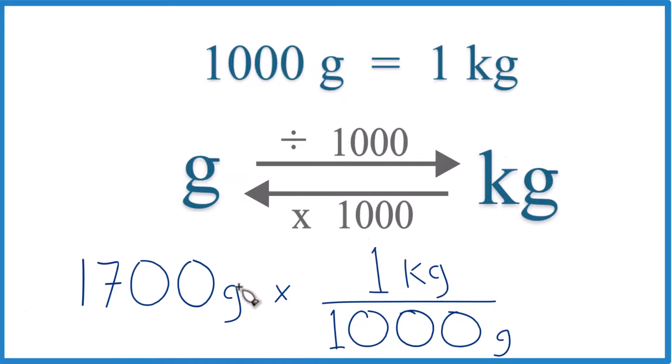So now grams on the top and the bottom, they cancel out. 1,700 times 1 kilogram. That's 1,700 kilograms. We divide it by 1,000. Same answer: 1.7 kilograms.